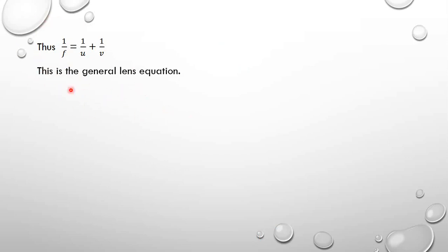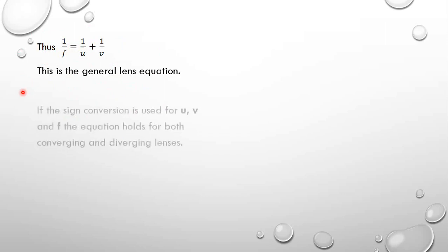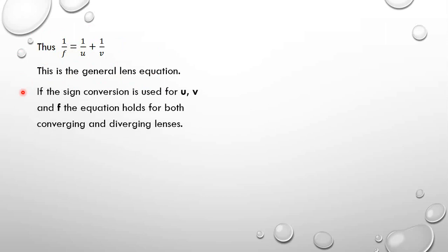This equation also works for a diverging lens, as long as you maintain the sign convention. The sign convention must be observed when using the same formula for a diverging lens. If the sign convention is used for U, V, and F, the equation holds for both converging and diverging lenses.